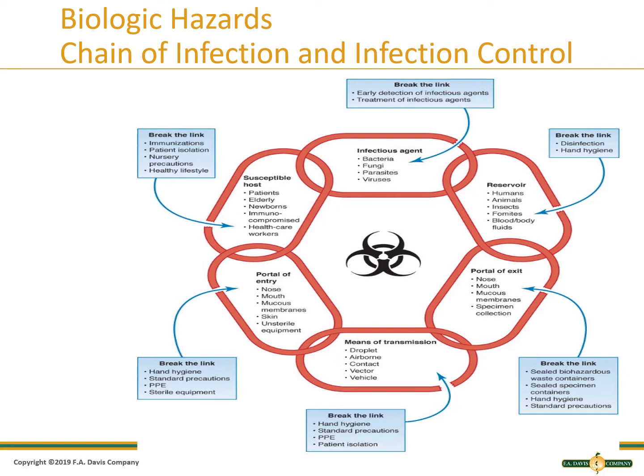A reservoir is a place where the infection resides before it reaches the susceptible host. It could be another person, animals, insects, fomites, or blood and body fluids. A fomite is an inanimate object you might touch and get an infection from — like a doorknob, a computer mouse, or a light switch. To break this link: disinfection, cleaning up, and hand hygiene.